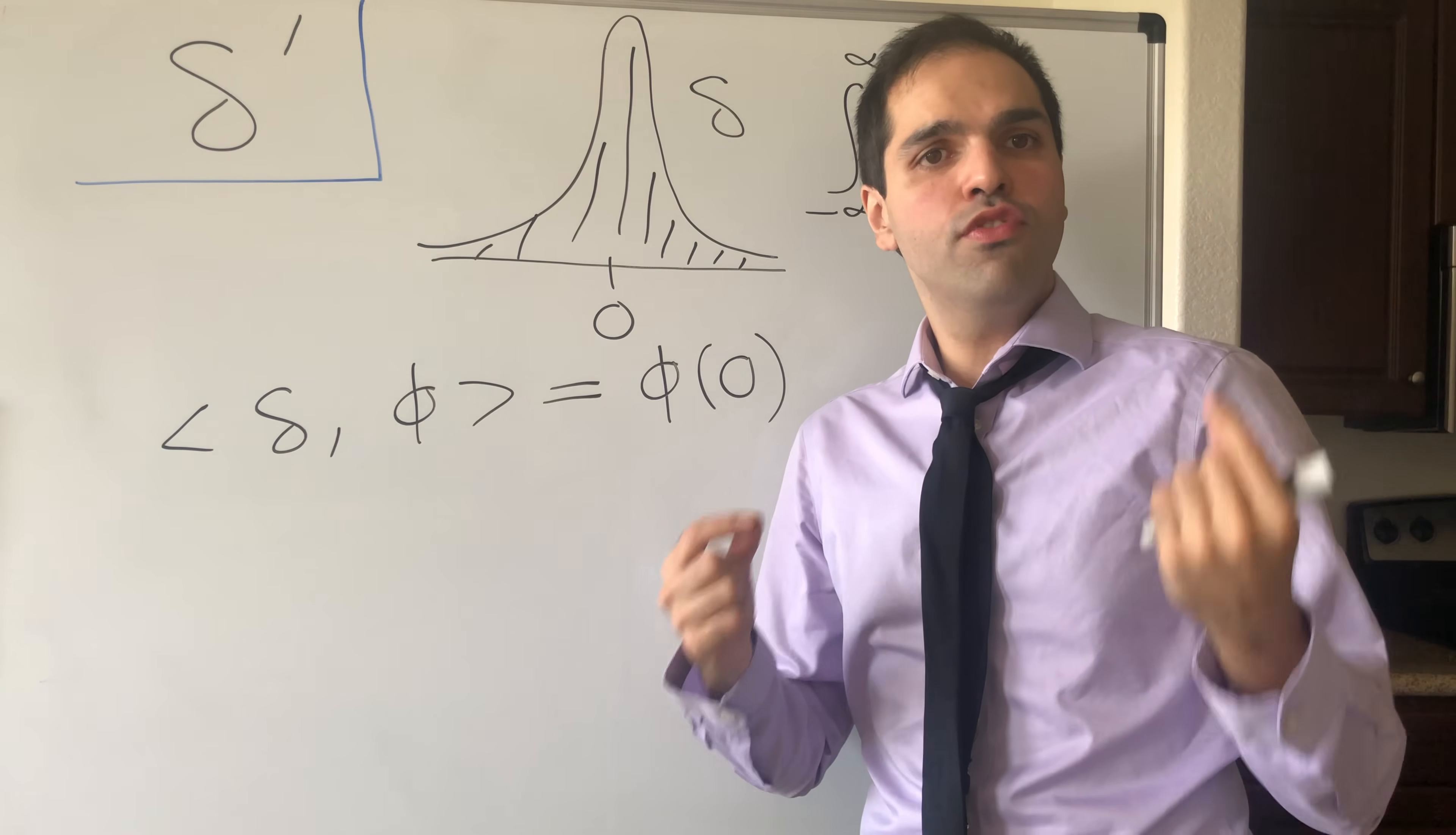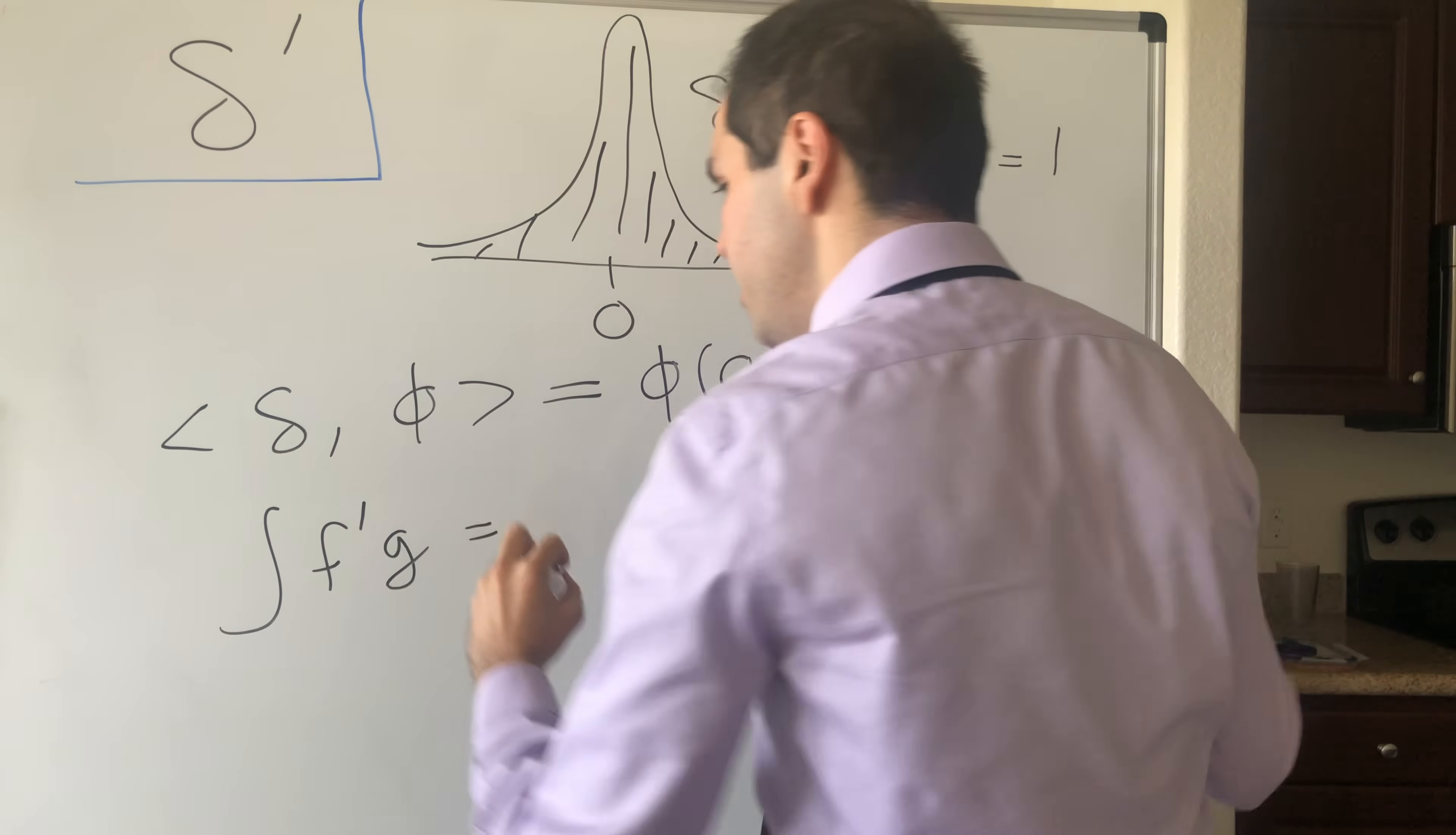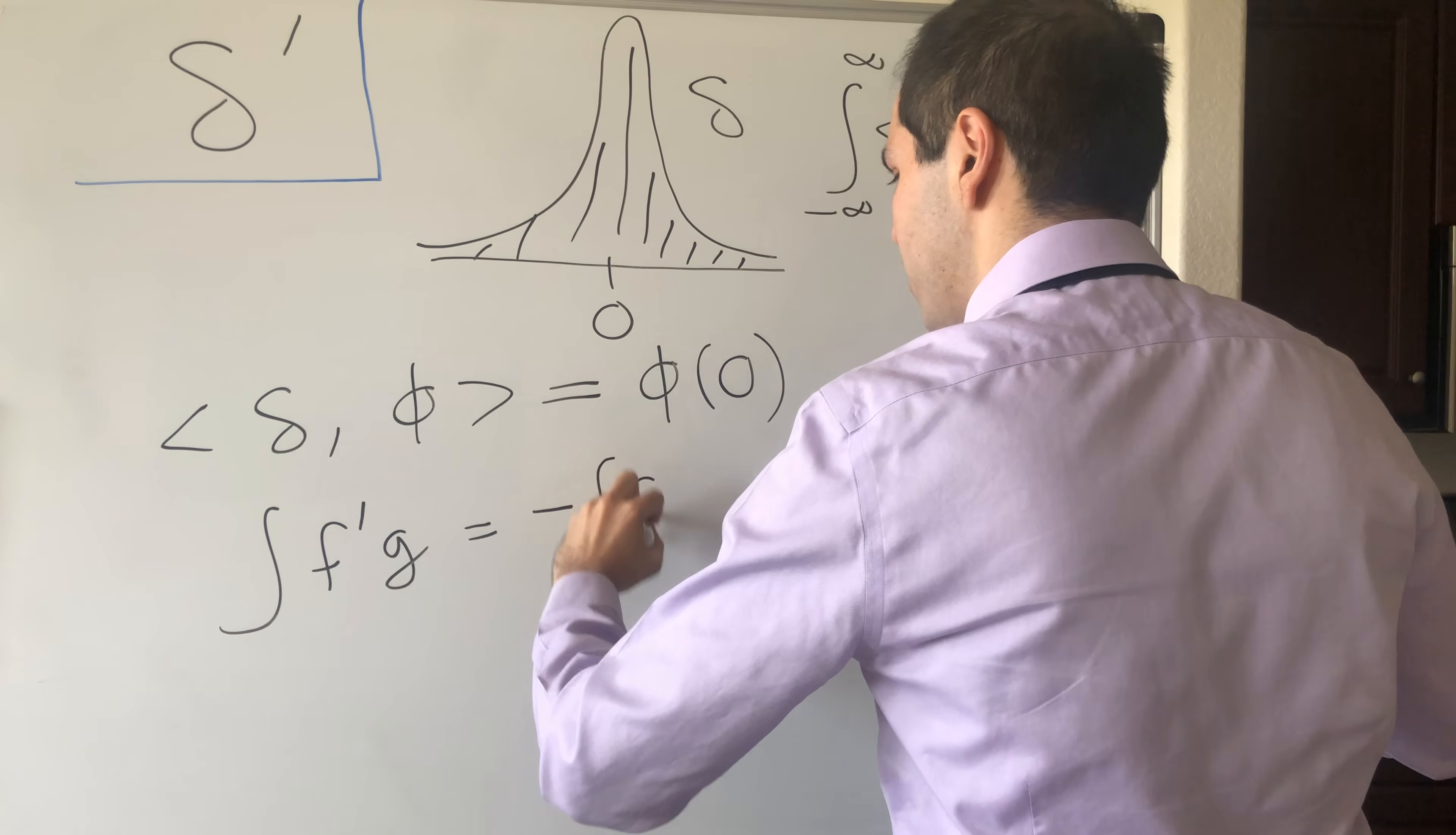So suppose you have two functions f and g which are zero at the endpoints. Then what does integration by parts say? It says that the integral of f prime times g equals fg, but which is zero at the endpoints, minus the integral of fg prime.